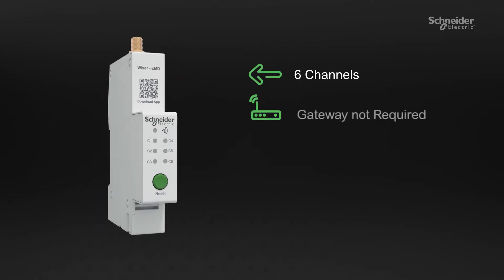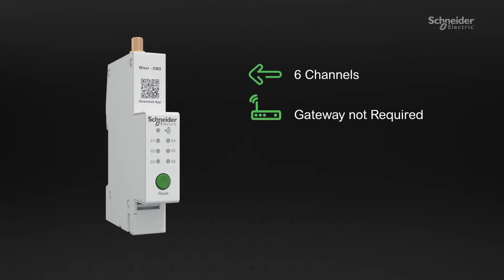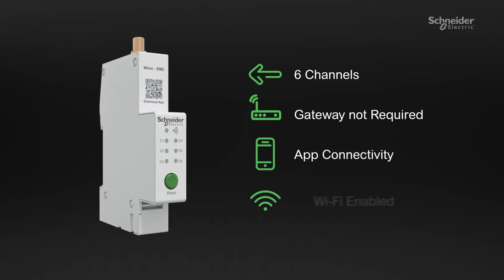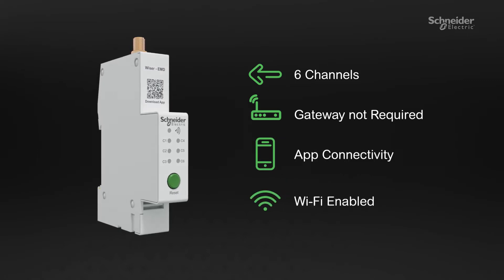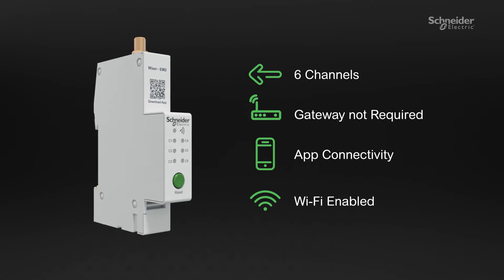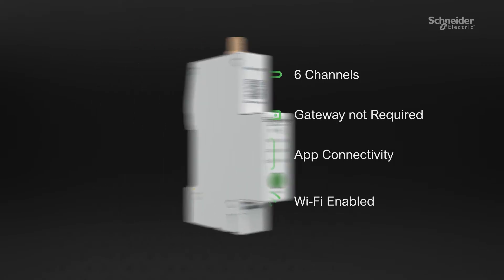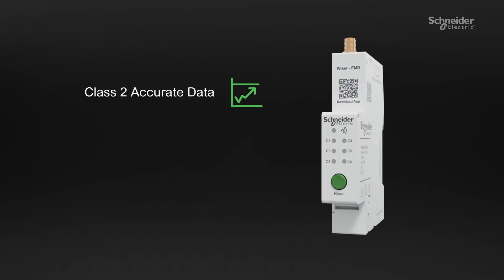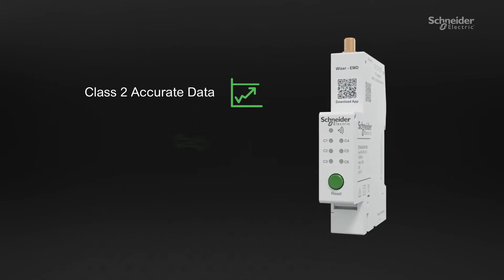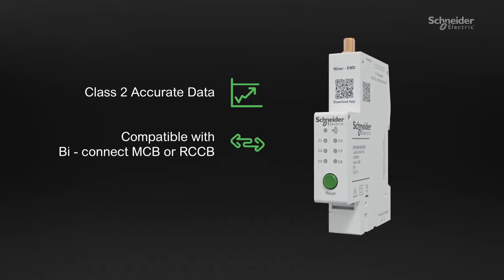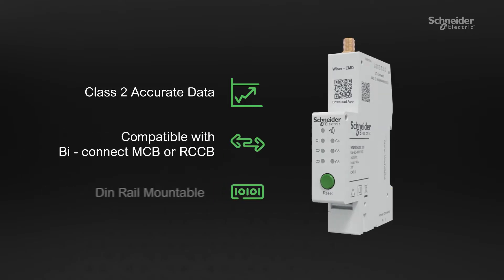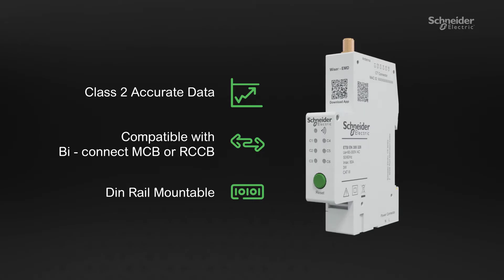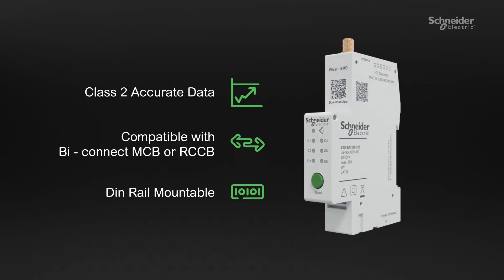The EMD does not need a gateway to function, has an app designed for both Android and iOS, and connects effortlessly to your Wi-Fi network. It is also certified for Class II performance category for accurate data, is compatible with any BiConnect, MCB, or RCCB, and is DIN rail-mountable for easy installation.